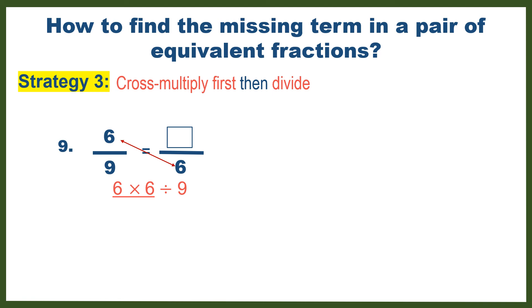So 4 is the missing number. You will know if your answer is correct because you cross multiply 9 and 4. You also get the same result as 6 times 6. Number 10. Cross multiply 15 and 4, which gives you 60. And when you divide 60 by 5, you get 12.